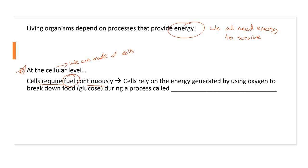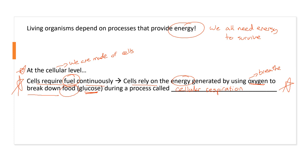Cells rely on the energy generated by using oxygen — the stuff that you actually breathe — to break down food. In this case, we'll talk about glucose, doing a process called cellular respiration. Oxygen is going to be very important for this process, to break down the energy in our food molecules so we can put it in another molecule called ATP. This whole process is called cell respiration.